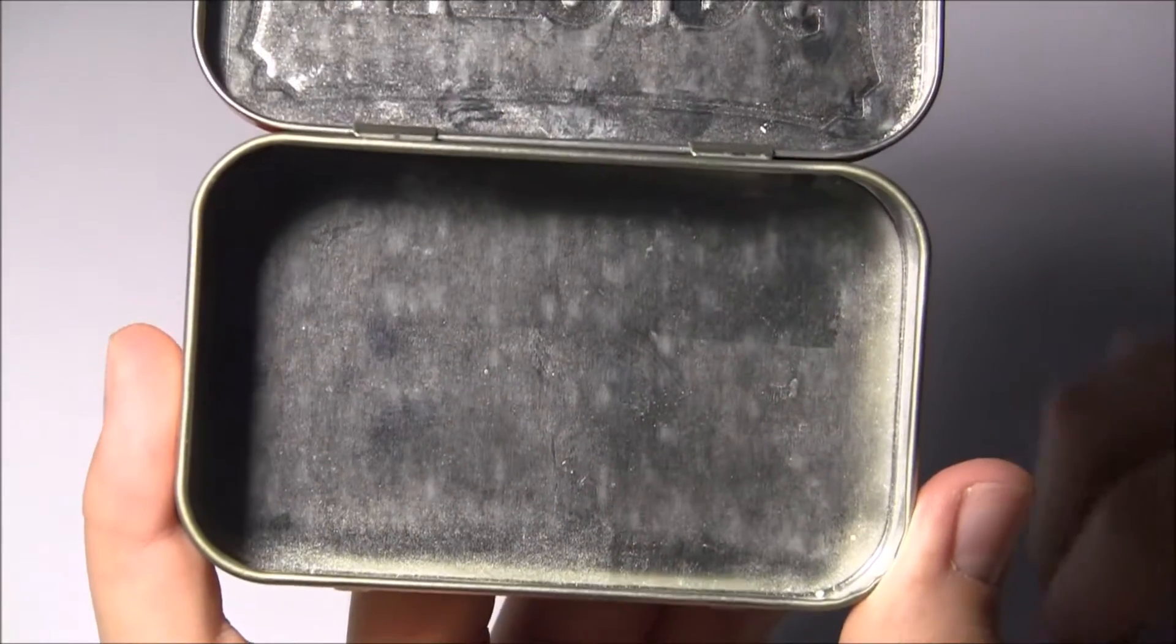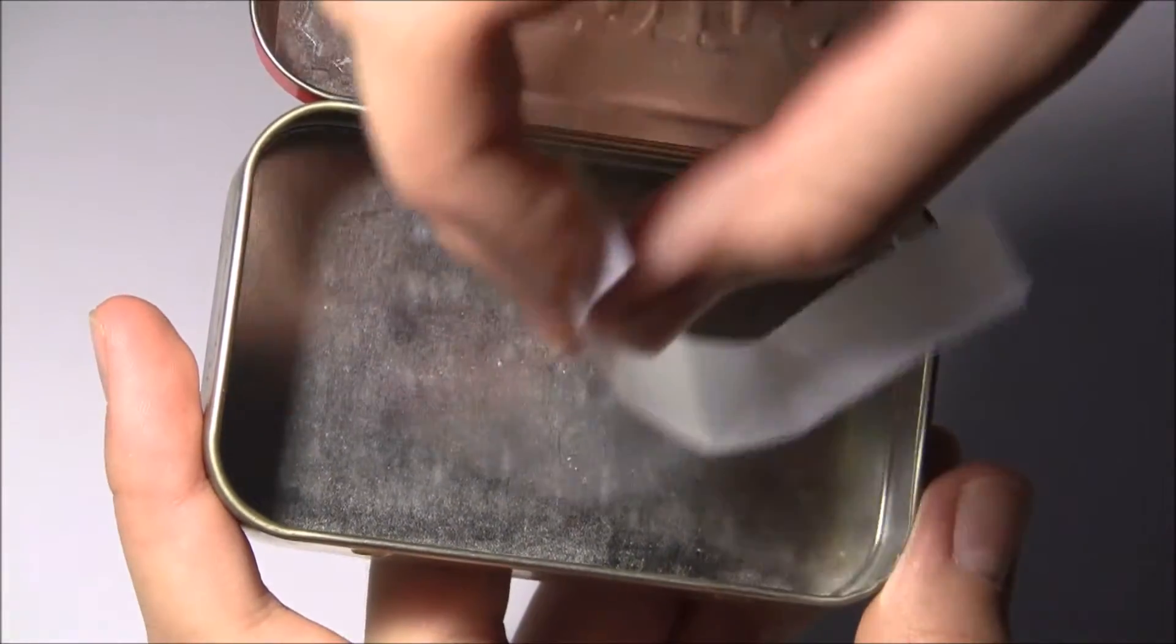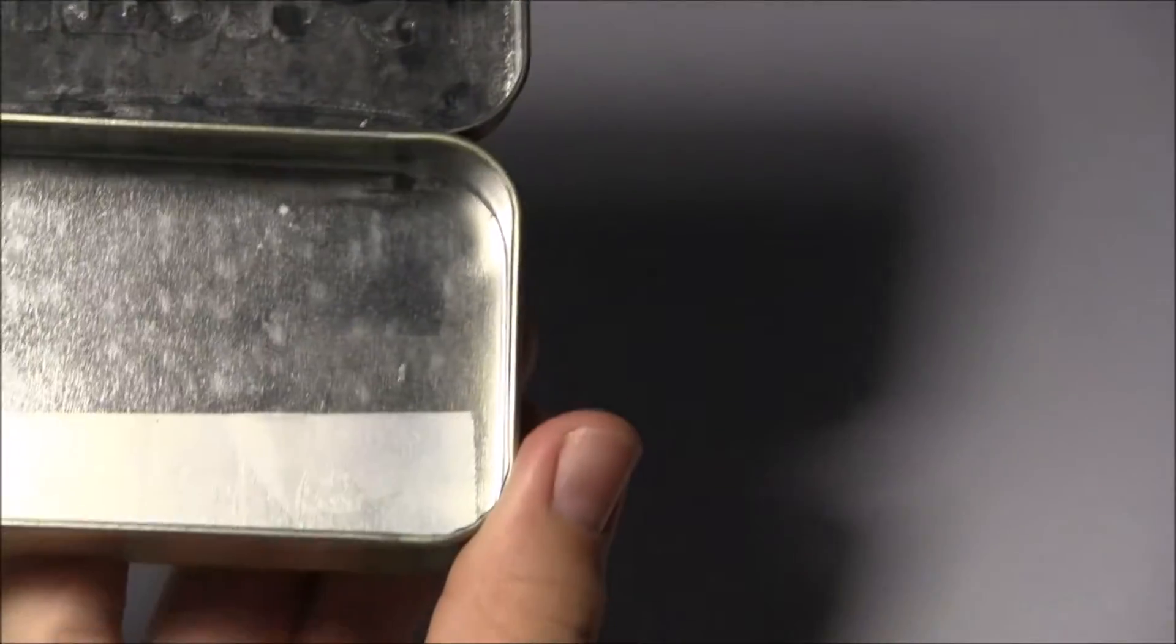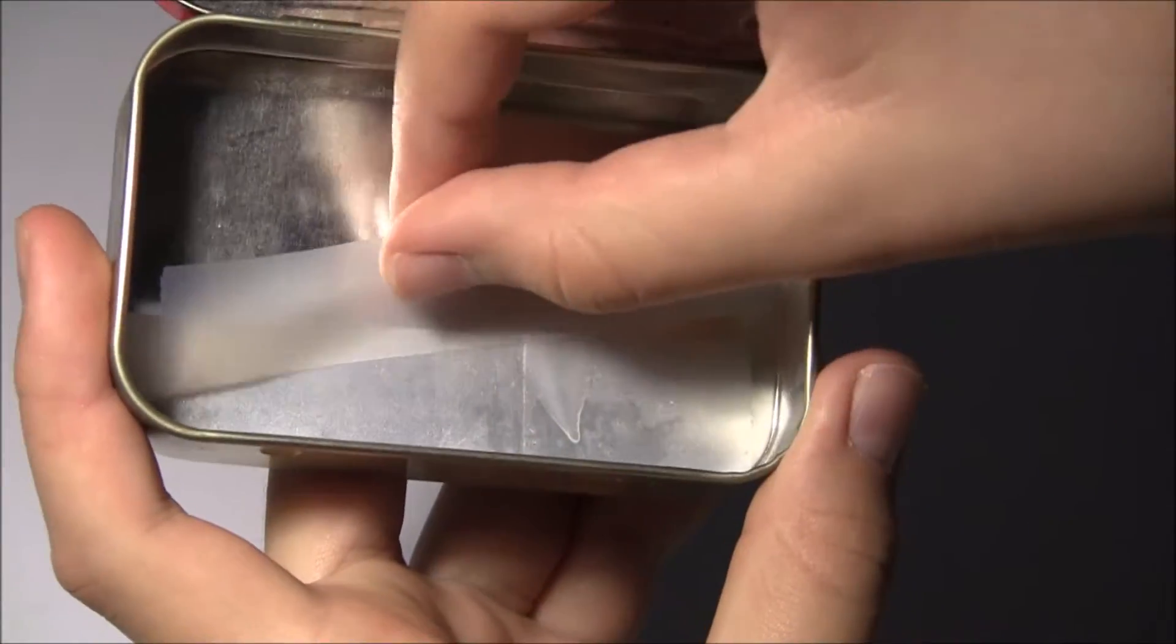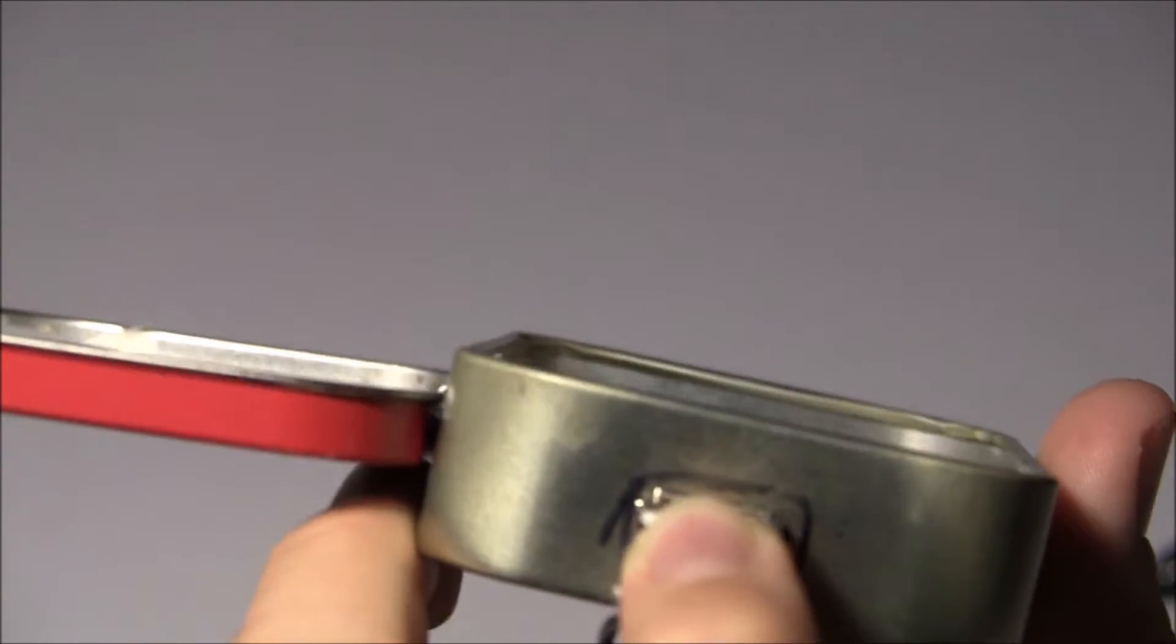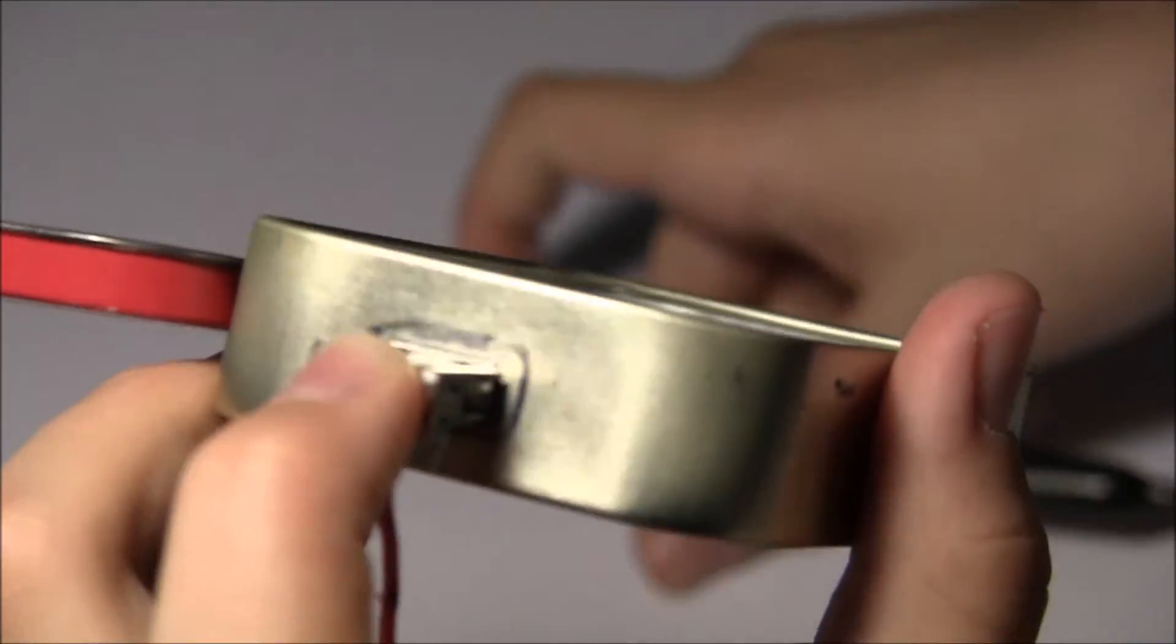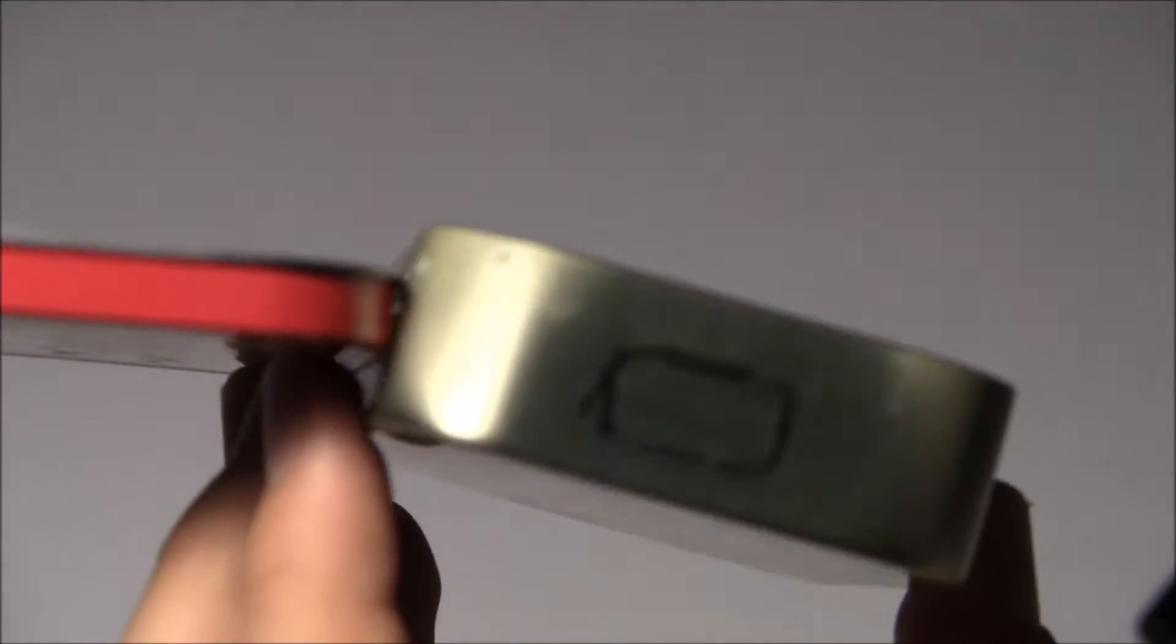Layer the inside of the tin with tape to make sure that the connections don't touch. Now use a pen to mark around the USB. Then, carefully cut it out with a Dremel. It should look similar to this.